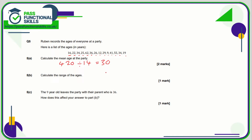The range is the age of the oldest person minus the age of the youngest person. The oldest person is 62 and the youngest is 9, and 62 minus 9 comes to a range of 53.